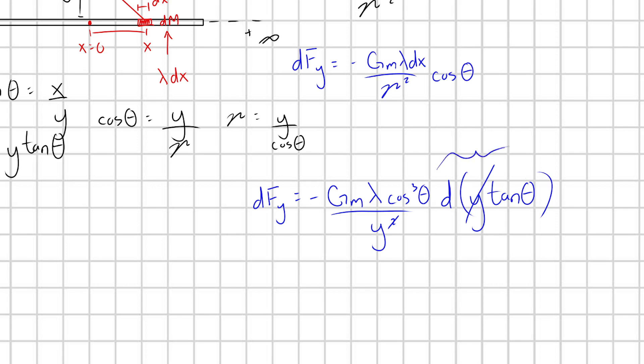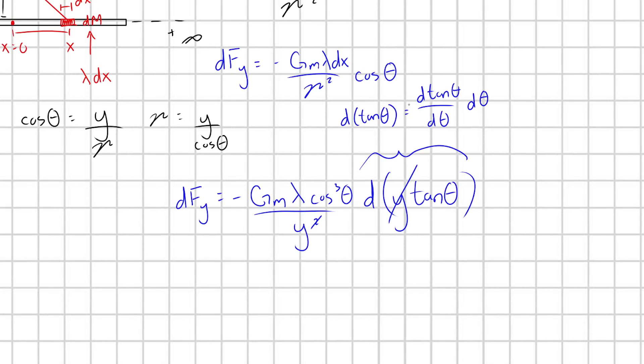So what is d tan theta though? Well, we're going to have to apply the chain rule to this. Or in other words, what I'm saying is that d tan theta is going to be equal to d tan theta with respect to theta times like a d theta. And if you want to think about this really roughly, it's like these d thetas almost cancel out with each other, leaving you with d tan theta. You can make the mathematicians really upset if you think about it that way. But it works for us as physicists.